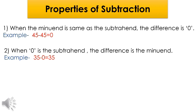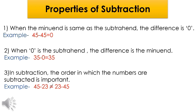If we take the number 35 and subtract 0 from it, we get the difference 35. So if we subtract zero from any number, the answer is the number itself. Property three: in subtraction, the order in which the numbers are subtracted is important.